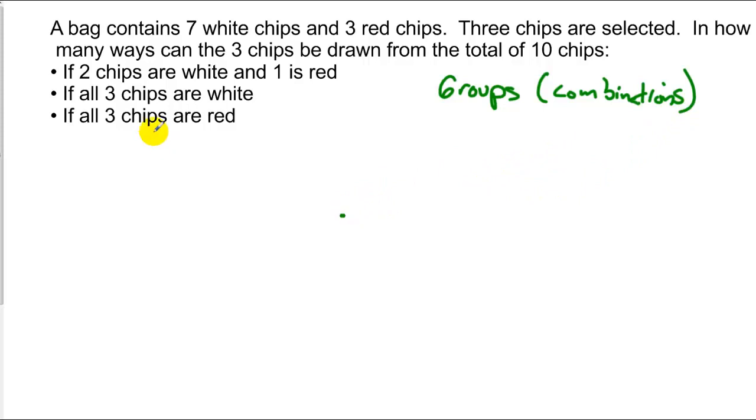So what we want to do is find, in our first part, if you have two chips that are white and one chip is red. So we have to ensure that when we reach in and pull things out, we get two chips that are going to be white. So to ensure white chips, we take those seven and choose two. And then to get the red chips, we've got three possibilities, and we're choosing one of those.